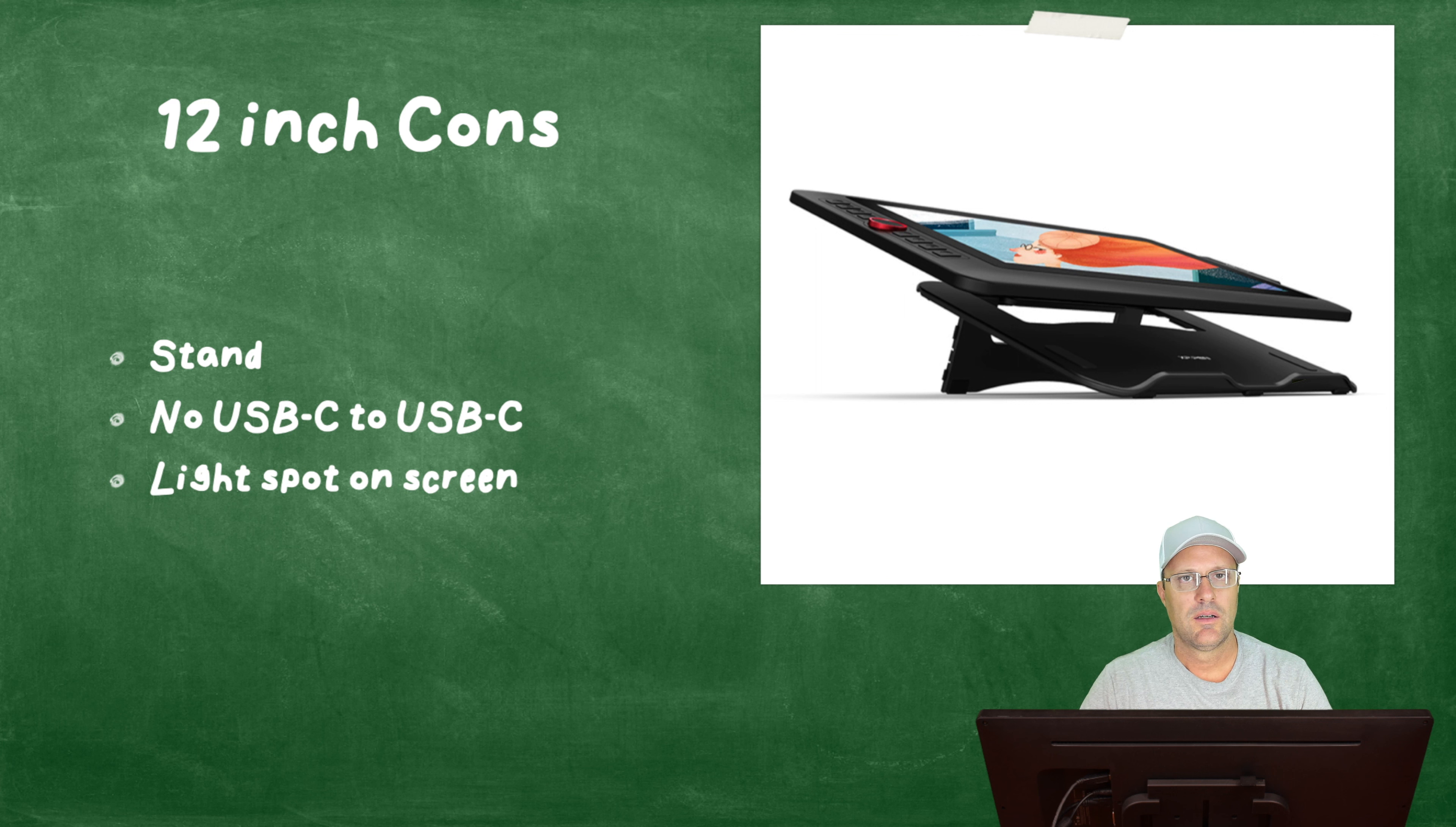After using it for probably about a year, my model got like a light spot on the bottom center of the screen. It's not huge - maybe like a couple inches wide and half an inch high or something. It's a little annoying, just got this weird bright spot on the bottom of the screen. But once you get going, you don't really notice it.